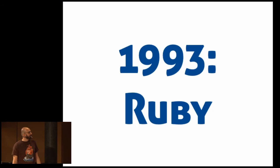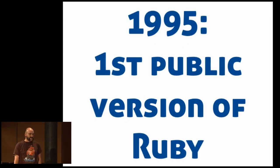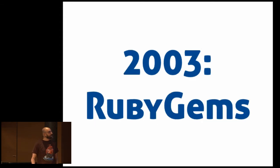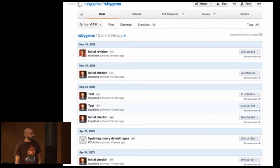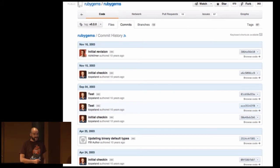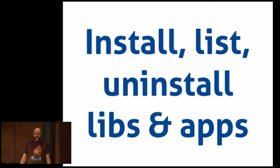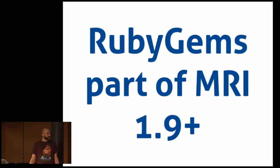Ruby is kind of old by now — more than a teenager, it's 20 years old. The first public version was released in 1995; 1.0 was released in 1996. It took until 10 years ago to actually have a package management system for the language. RubyGems is still on GitHub, you still have access to the history. If you use Rails you've used it to install dependencies. You even get development dependencies so you don't have to put RSpec in production. It's now part of MRI 1.9, so it's pretty easy to get going.